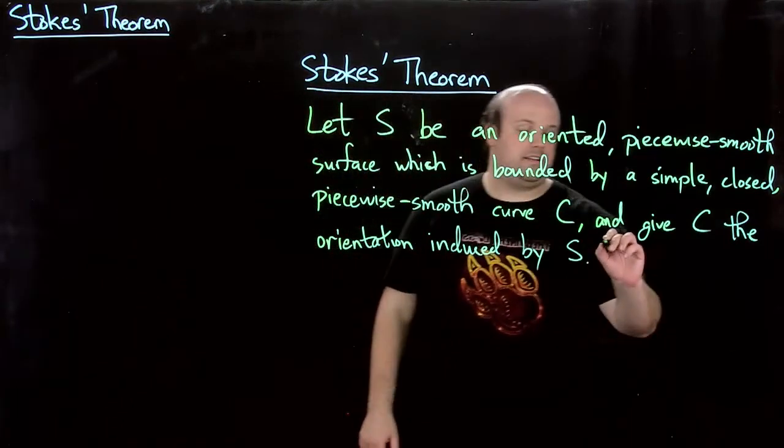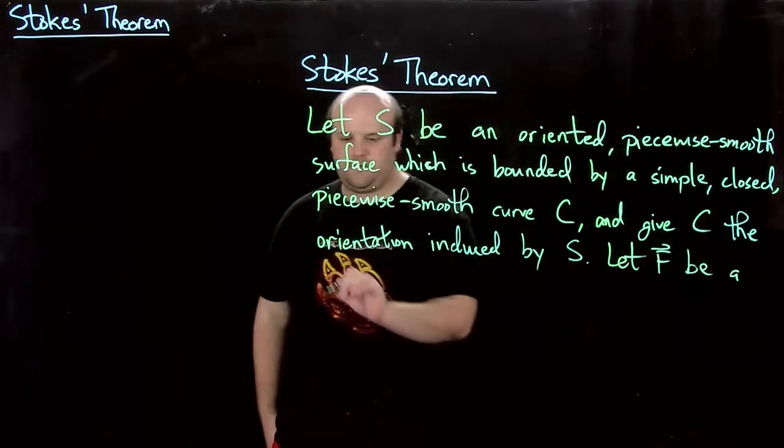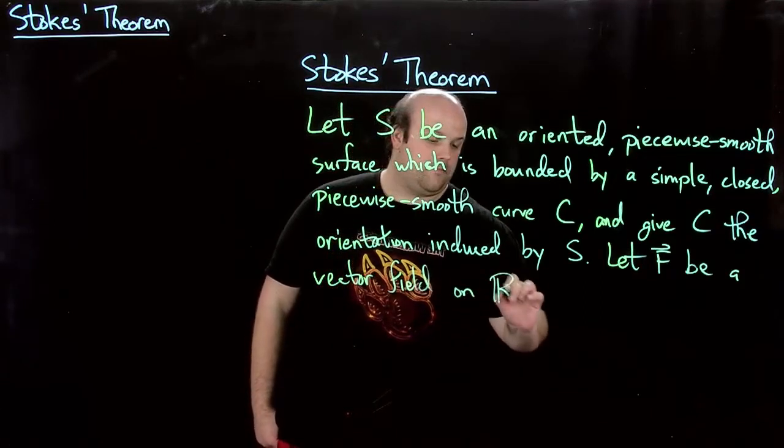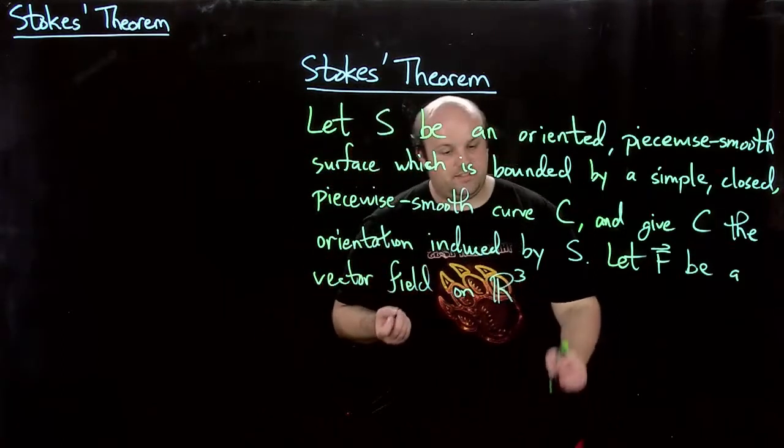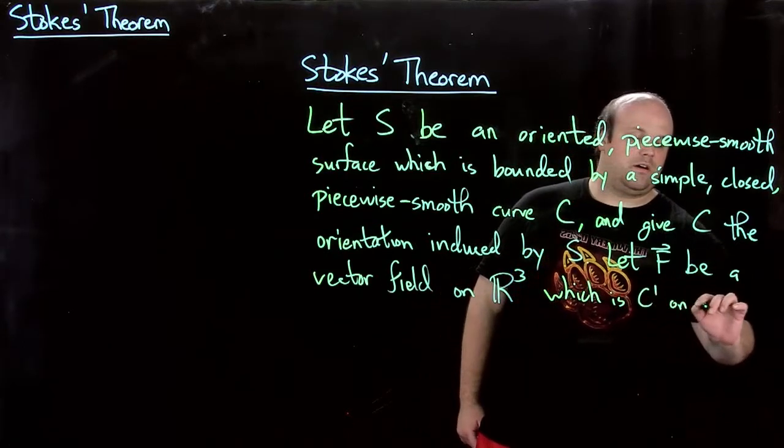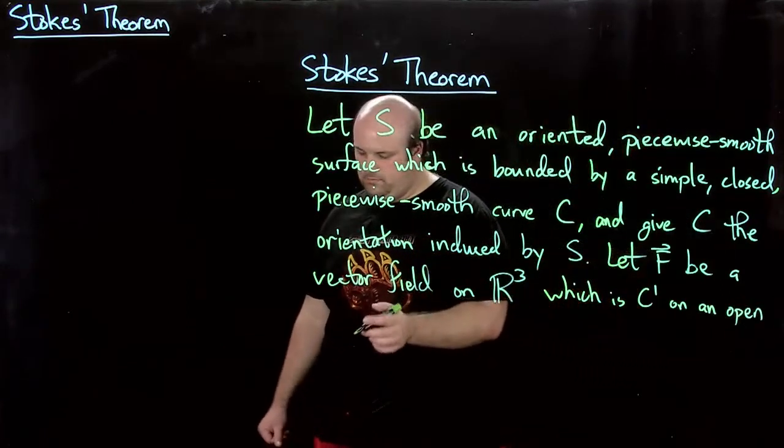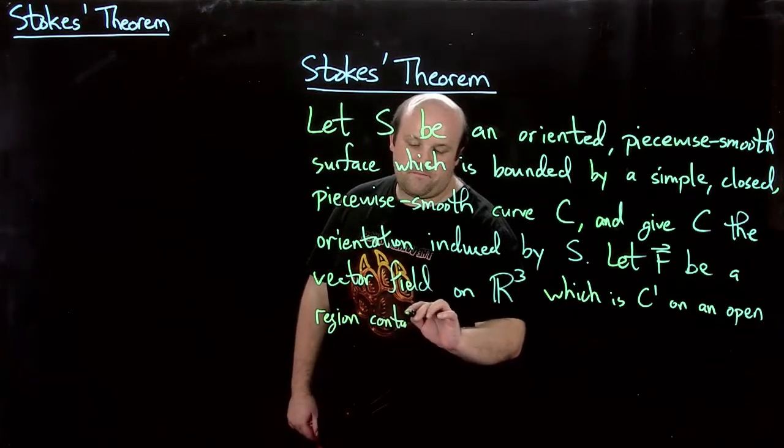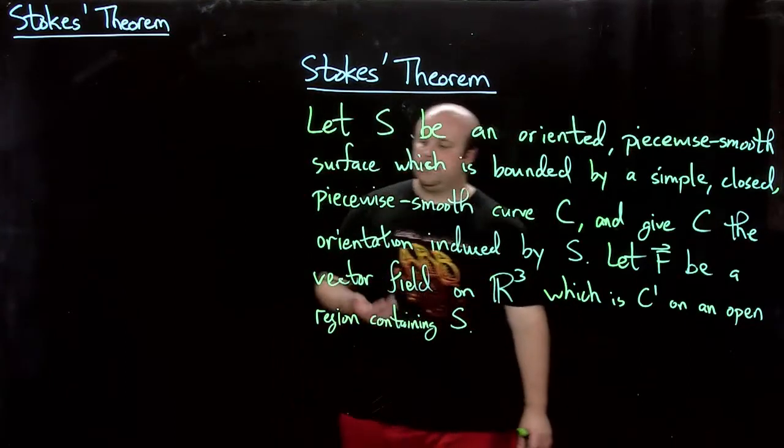Now we're going to let F be a vector field on R³. So a 3D vector field, which is C¹ on an open region containing S. Then what do we get?